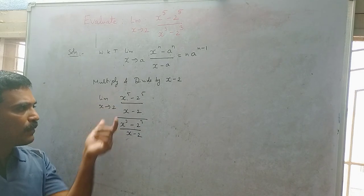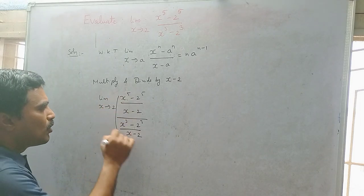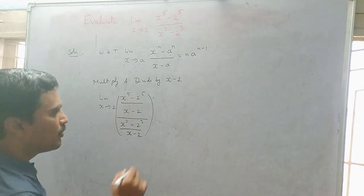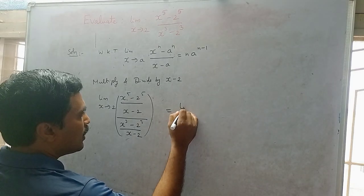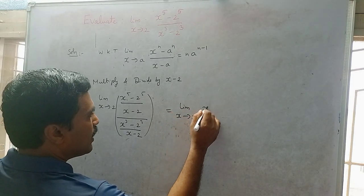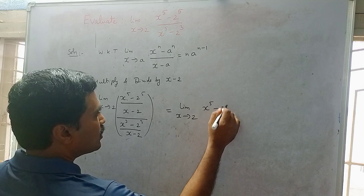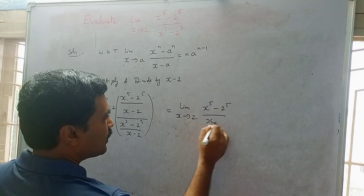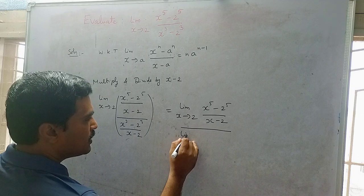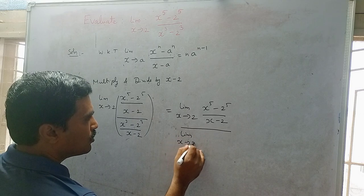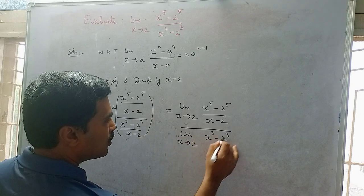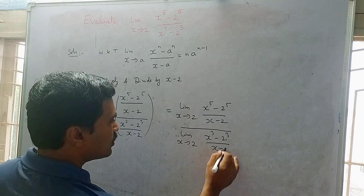In the next step, you apply the limit to both the numerator and denominator separately. This gives: [limit as x tends to 2 of (x^5 minus 2^5) divided by (x minus 2)] divided by [limit as x tends to 2 of (x^3 minus 2^3) divided by (x minus 2)].